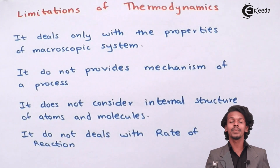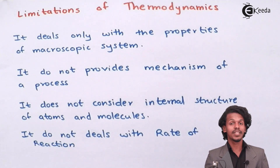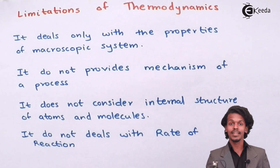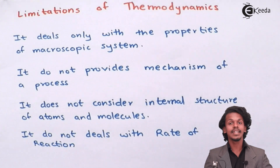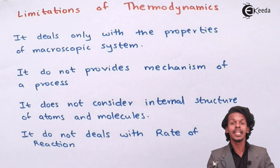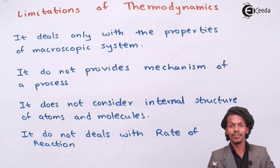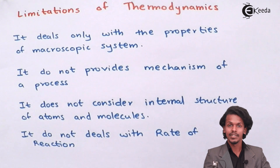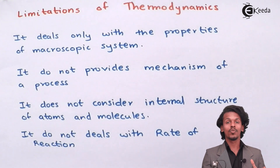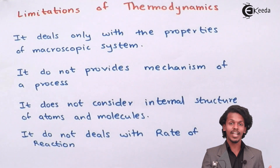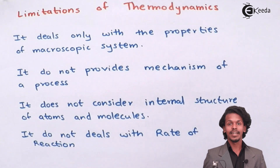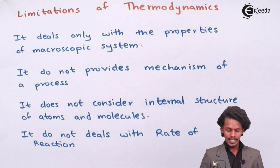Another drawback is that thermodynamics doesn't consider the internal structure of atoms and molecules. We cannot predict what the structure of the particular product or reactant involved in the reaction would be. Thermodynamics places this limitation — we cannot determine the structure of a particular atom when converted into a product or its structure during the mechanism of product formation.